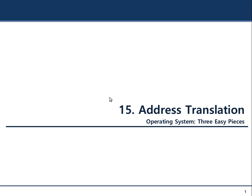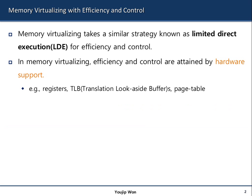Let's continue the discussion. We are in the second part of virtualization, which is virtualizing the memory. Memory is a physical component — an array of bytes where the data and code of a program or process is placed. Memory virtualization takes a similar strategy known as limited direct execution for efficiency and control. To attain this efficiency and control, there should be some hardware support.